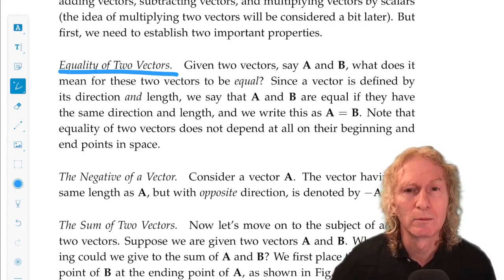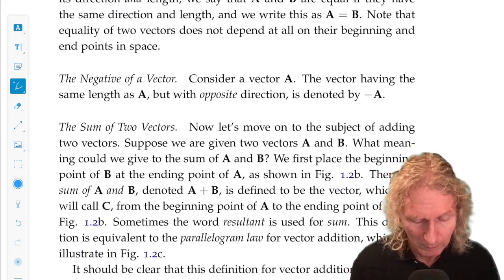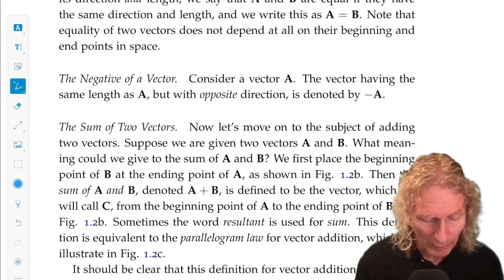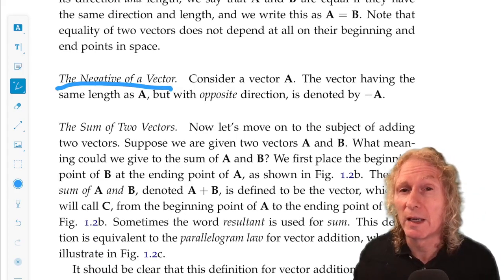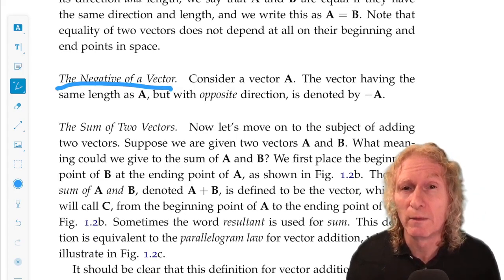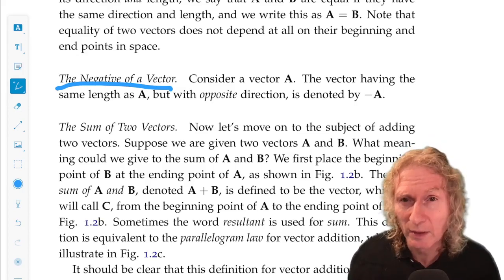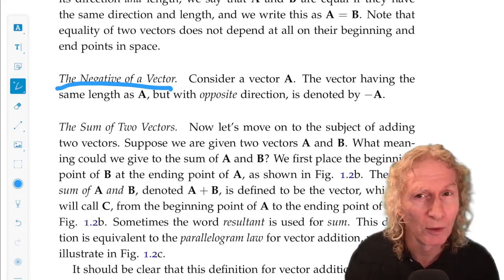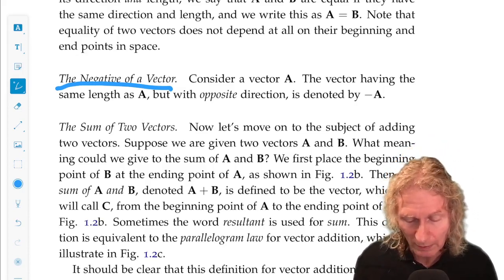The negative of a vector, you can guess what that means. If we have a vector A, the negative of A is just this vector with the exact same length but the opposite direction. We call it minus A.